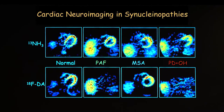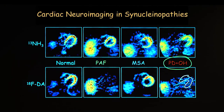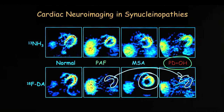In Parkinson's disease with orthostatic hypotension, this blood flow scan shows where the heart is, but you don't see the heart at all on the sympathetic imaging scan — very dramatic noradrenergic deficiency. In multiple system atrophy, in most cases, the innervation is normal. In pure autonomic failure, you don't see the heart — it looks very much like Parkinson's with orthostatic hypotension.